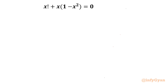Hello my dear friends, welcome to InfiGaam. In this very exciting video on factorial equations, we are going to solve one nice factorial equation: x factorial plus x times (1 minus x squared) equal to 0. While solving this problem, I will use factorial notation, recursive formula, and two methods — one is traditional and the second one is innovative.